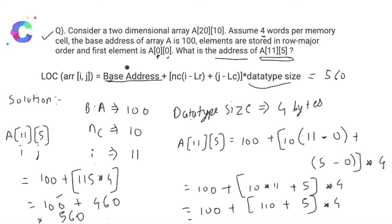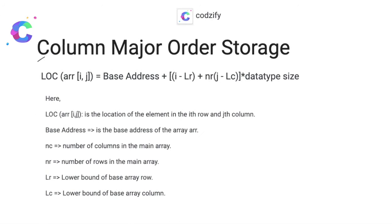This is how you calculate the address of any element using row major order. All you have to remember is the formula: base address + NC × (i − LR) + (j − LC) × data type size. The only difference between row major and column major order is that in column major order we use NR instead of NC.